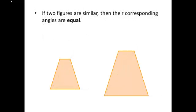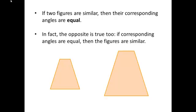When two figures are similar, their corresponding angles are equal. In fact, the opposite is true too. If all of the corresponding angles are equal, then the figures have to be similar, and some of you may have learned this in a geometry class.